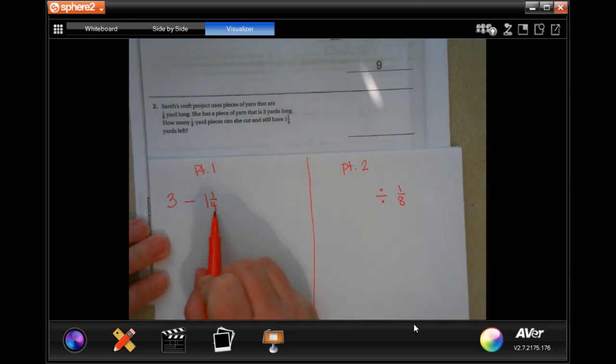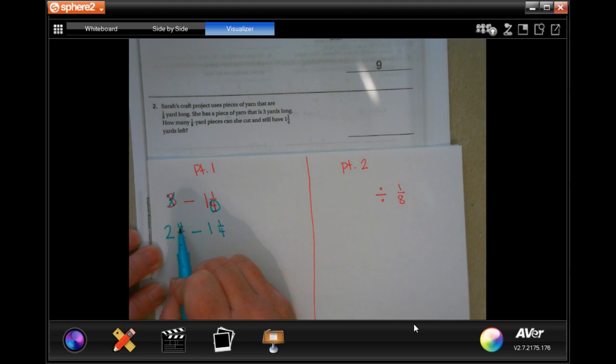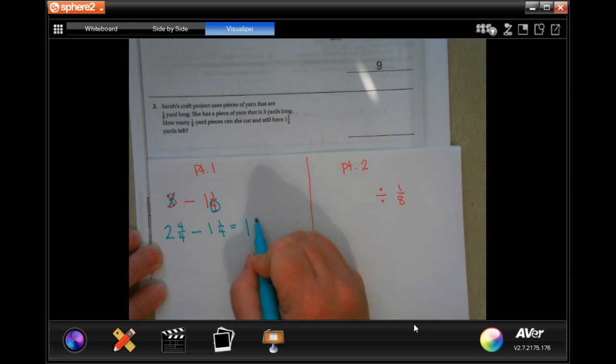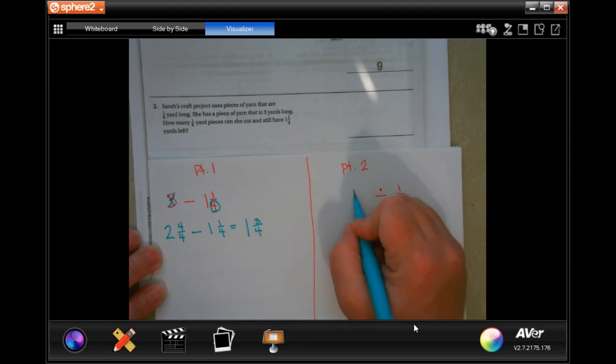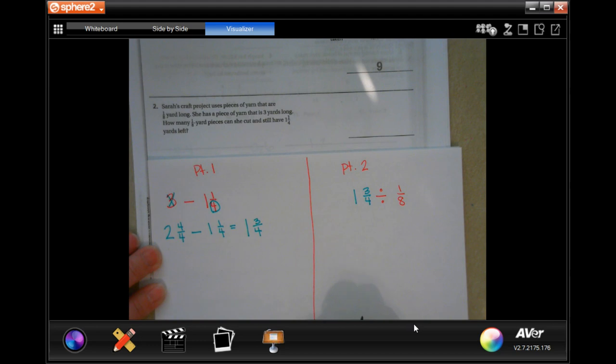This is a fraction, and I don't have a fraction here. So what I'm going to do is I'm going to borrow 1, making that a 2, and this denominator right here is 4. So I'm going to put a 4 over 4. This is equal to 3. Now minus 1 and ¼. So now I have 2 minus 1, which is 1, 4 minus 1, which is 3, and my denominator stays the same. So I have 1 and ¾ left over.